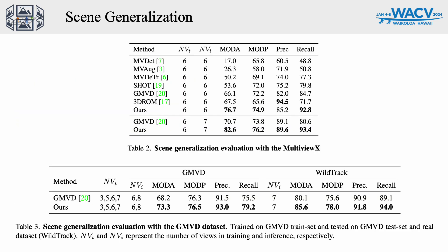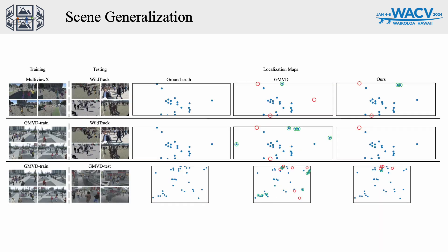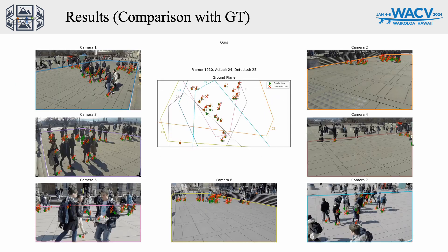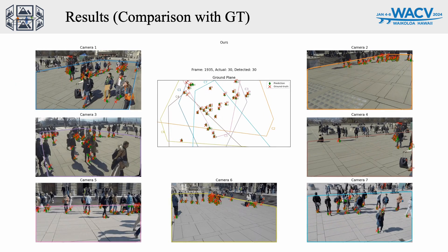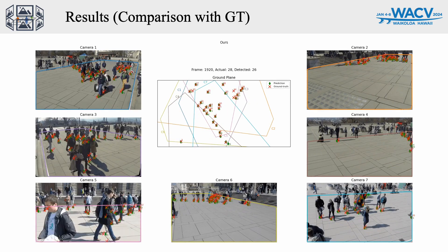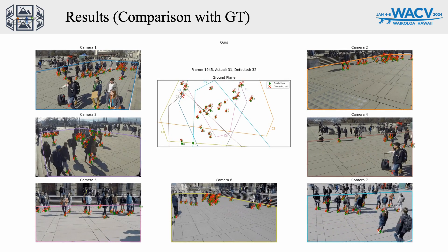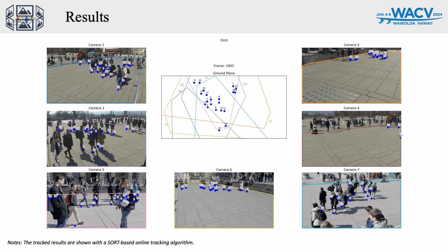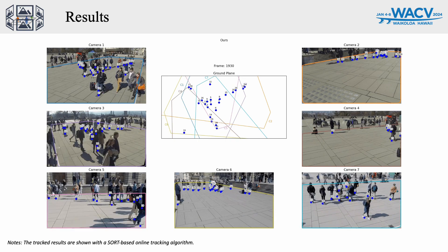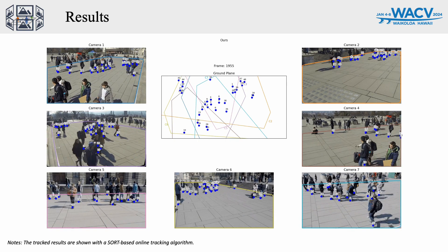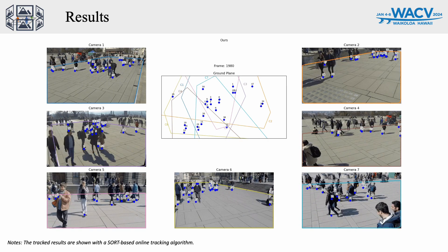On scene generalization benchmarks, we saw a huge improvement compared to previous methods both in small-scale multi-view and large-scale GMVD datasets. Our model is able to detect accurately with less false positives and more true detections. This video shows the performance of our model compared to the ground truth. With the integration of a simple tracking algorithm, our model is able to track each detected instance accurately with less identity switches.